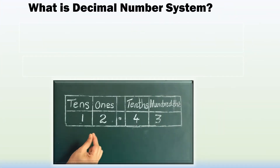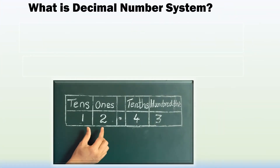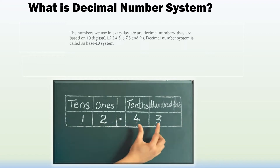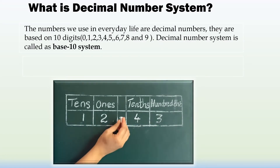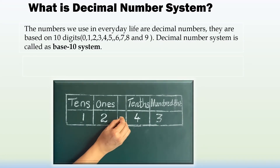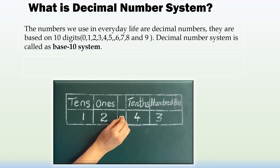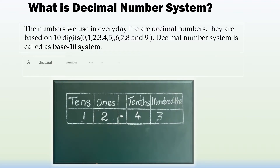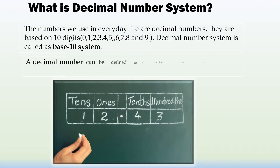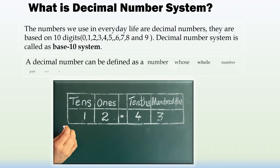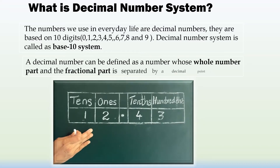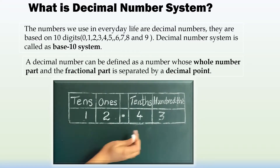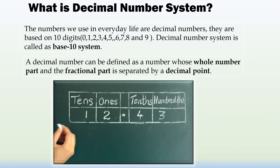A decimal number can be defined as a number whose whole number part and the fraction part is separated by a decimal point. This dot is called the decimal point, and this number system is otherwise called the base-10 system because the place value of each digit is raised to the power of 10.